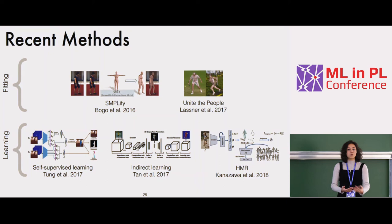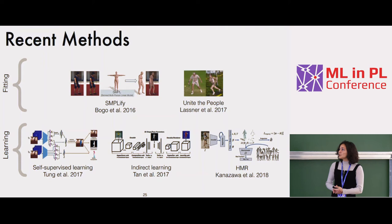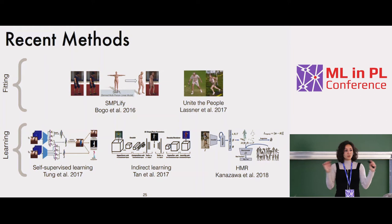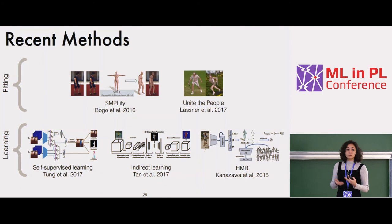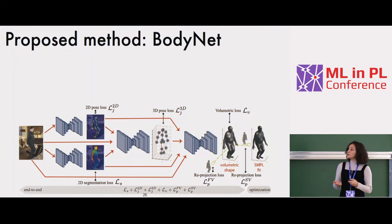These were the first fully automatic works recovering 3D human shape from a single image. Since 2017 we've also seen neural network-based approaches that input an image and directly output the low-dimensional parameters of the body model — 10 plus 72 dimensions. HMR (Human Mesh Recovery) is one state-of-the-art approach. These work pretty well, but we wanted to explore alternative representations beyond the parametric one. That was the idea of our work, called BodyNet.